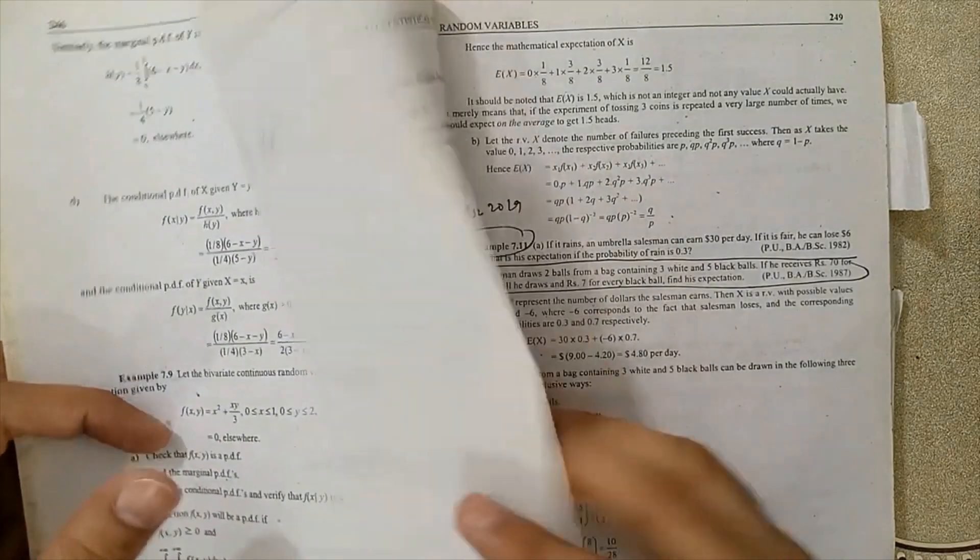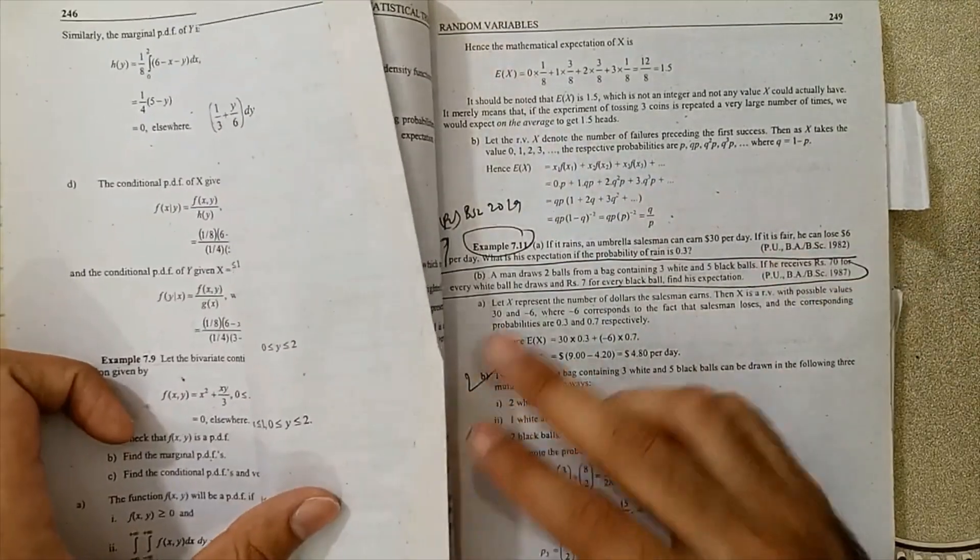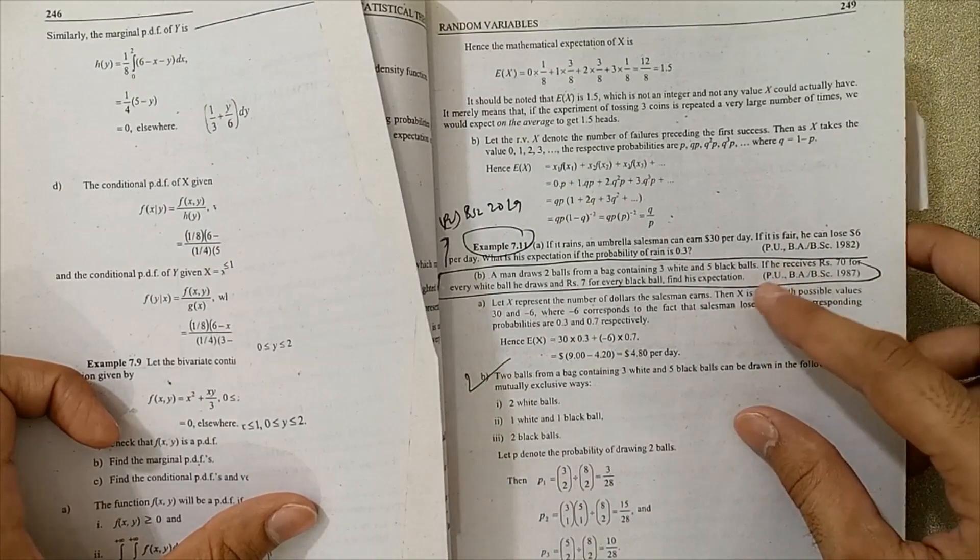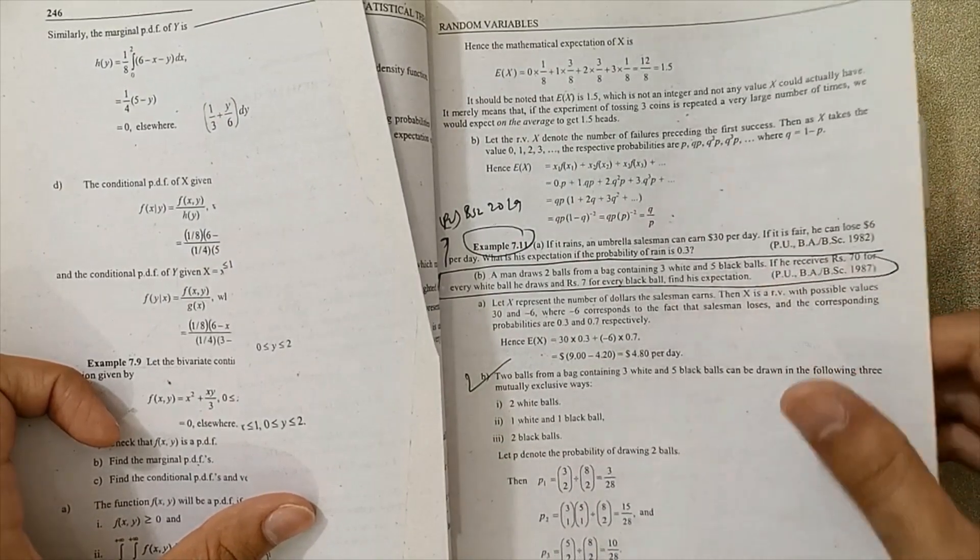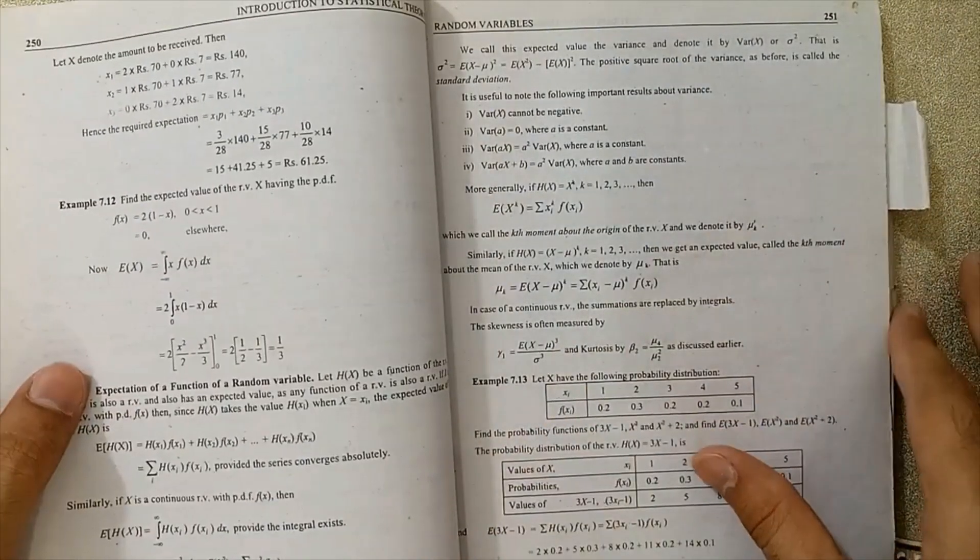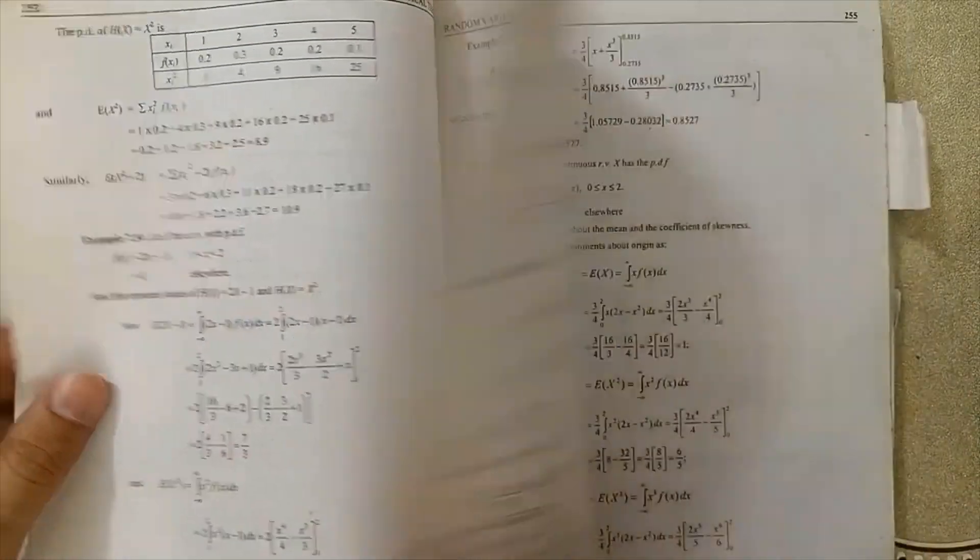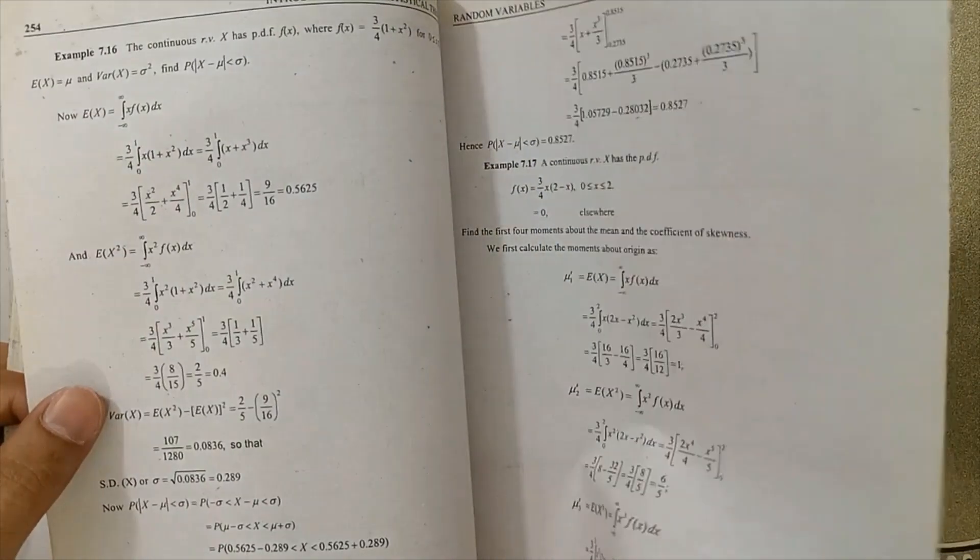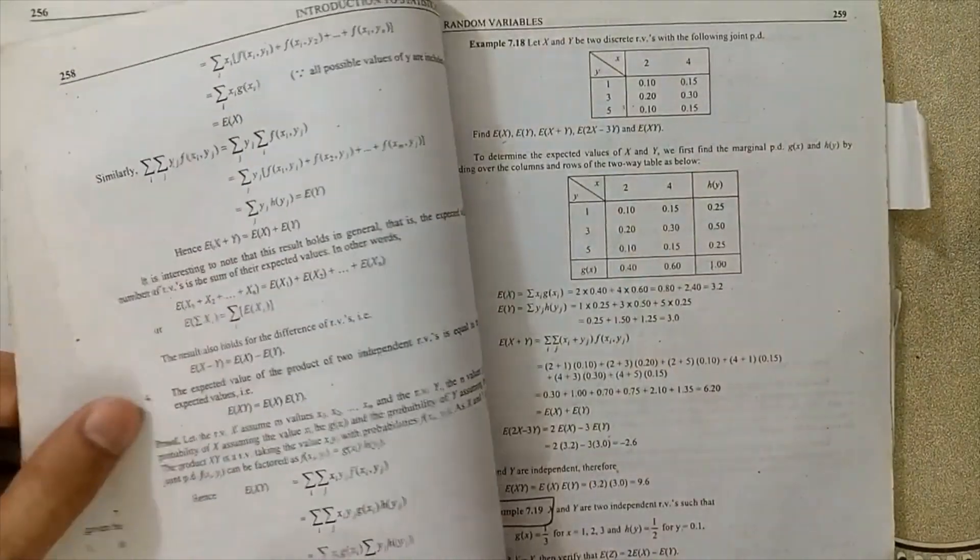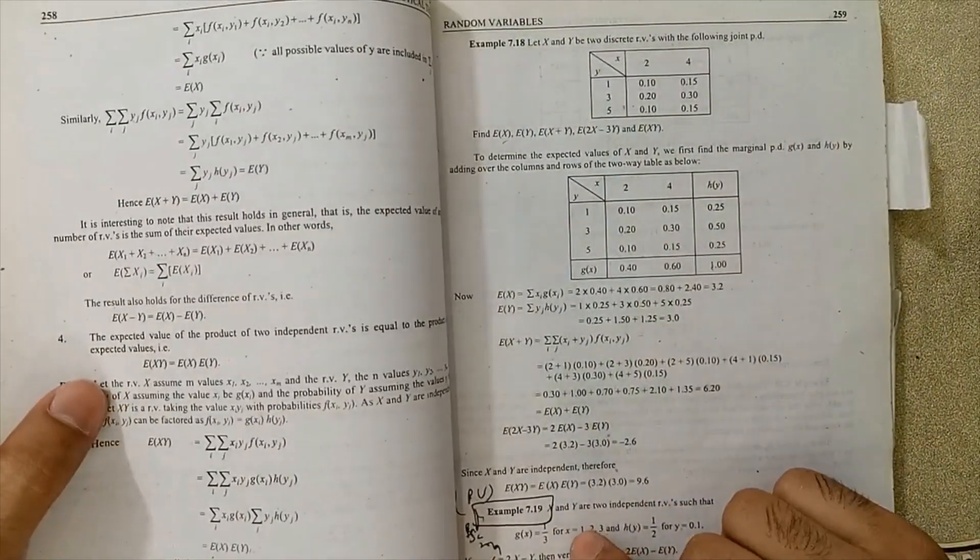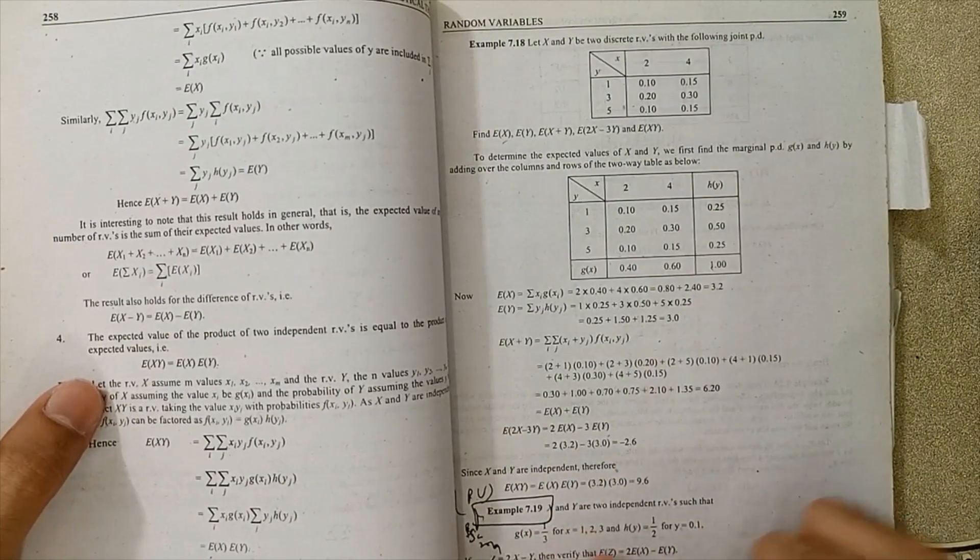At page 249, example 7.1, especially part B, is very important for exams - must remember that. At page 259, example 7.19 is very important for exams.